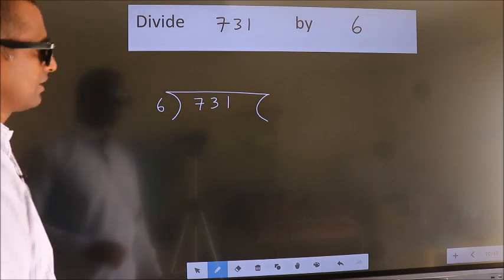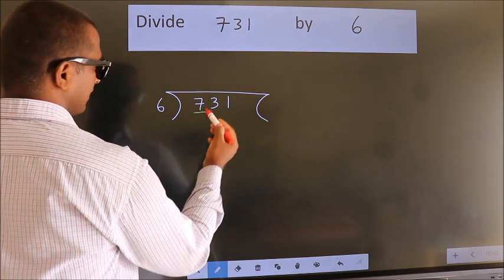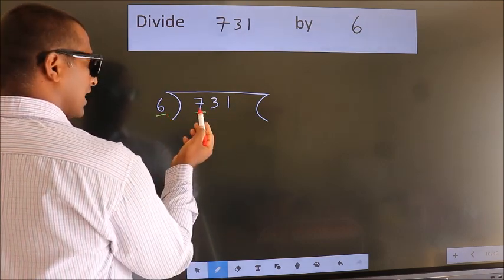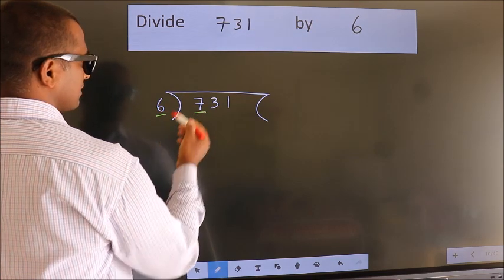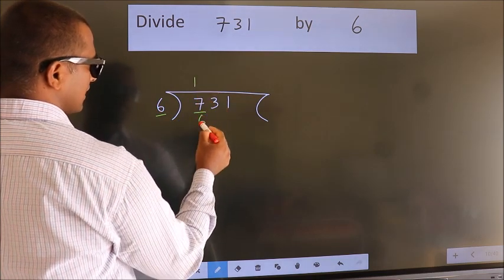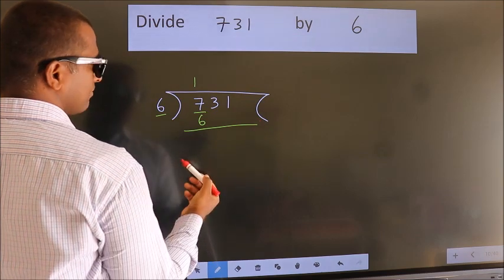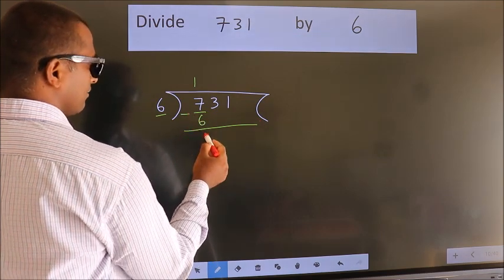Next. Here we have 7. Here 6. A number close to 7 in 6 table is 6 once 6. Now we should subtract. We get 1.